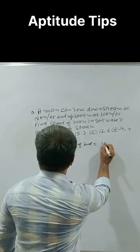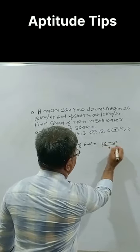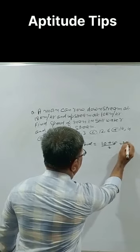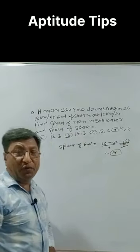So the correct answer is 10 km plus 18 by 2. So we get 28 by 2, that is 14. So speed of boat is 14.